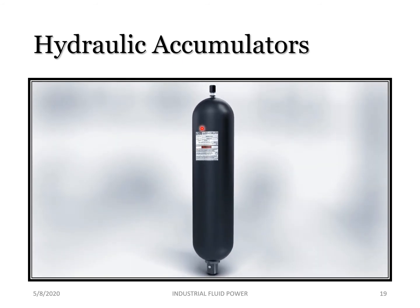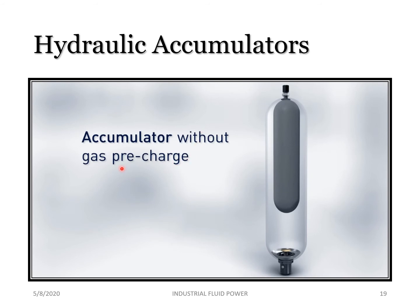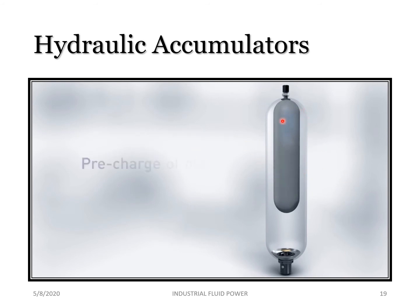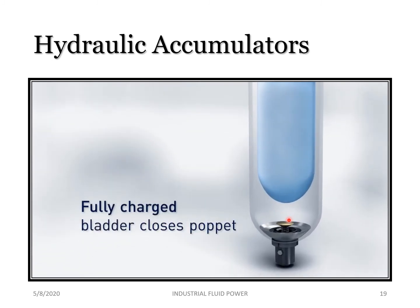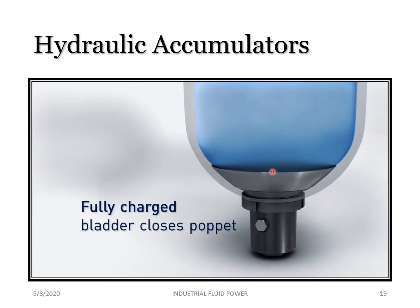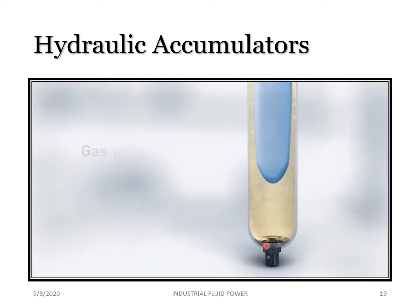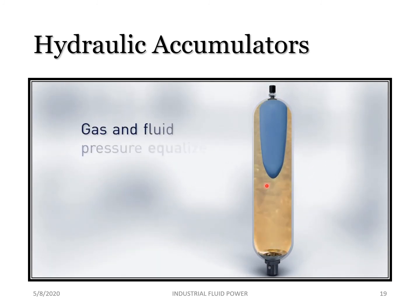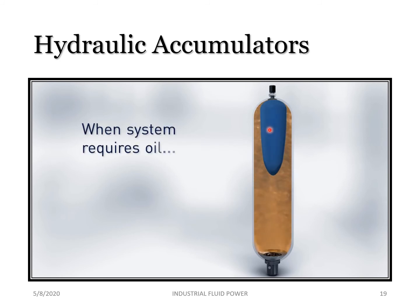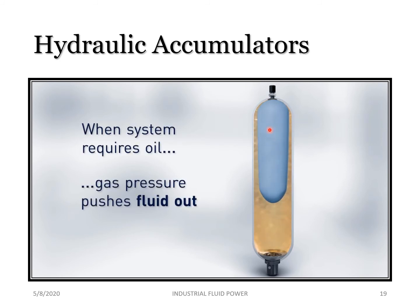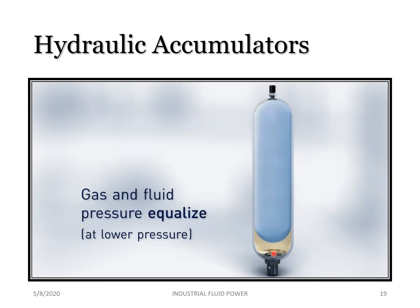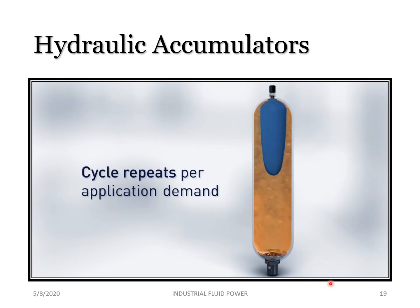This is how the gas pressurized accumulator works. Without gas pre-charge it looks empty. The bladder is now being pre-charged with gas — the bladder expands and fills until it is fully charged. When high pressurized fluid flows in, it compresses and squeezes the bladder. When the system requires oil, the gas pressure pushes the stored fluid out of the accumulator. The bladder is compressed during charging and expanded during discharge.